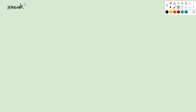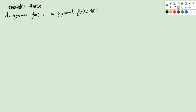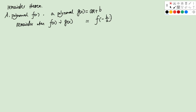Now let's look at the second theorem: the Remainder Theorem. Given a polynomial f(x) and a linear polynomial g(x) = ax + b, the remainder when f(x) is divided by g(x) equals f(-b/a), where -b/a is the root of g(x).